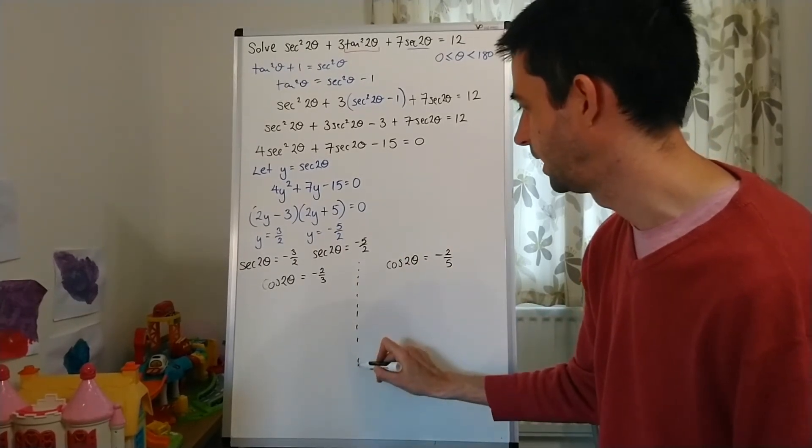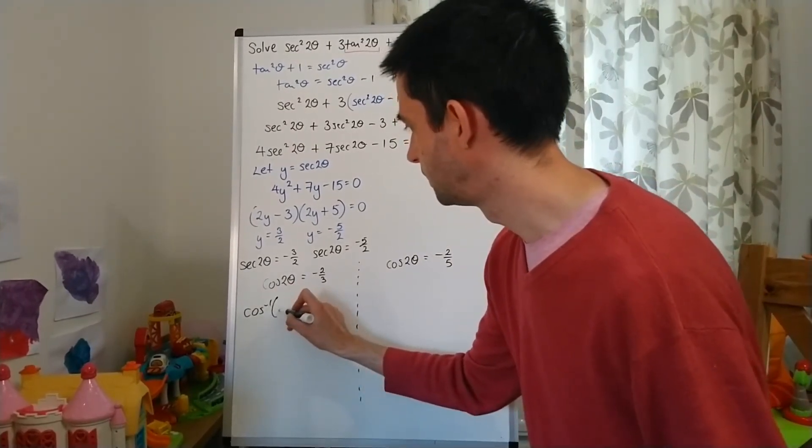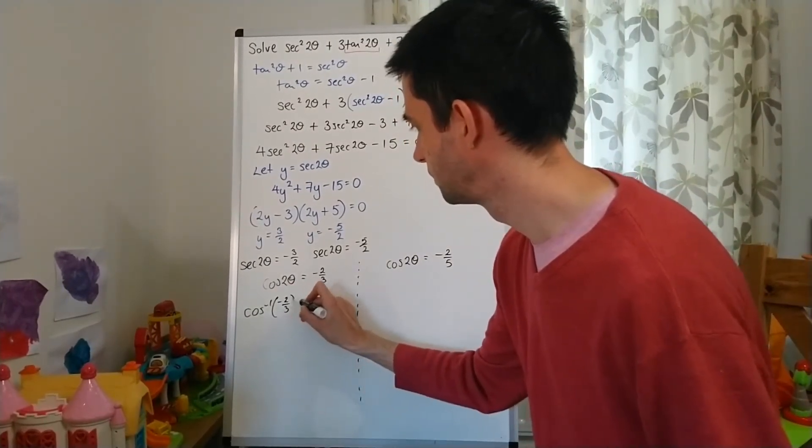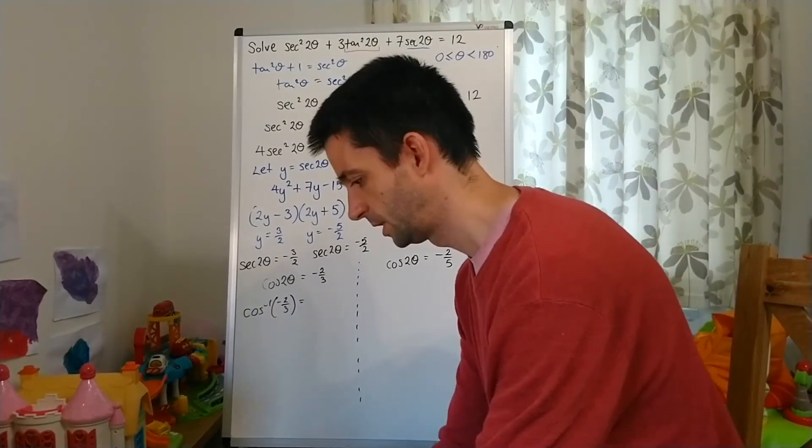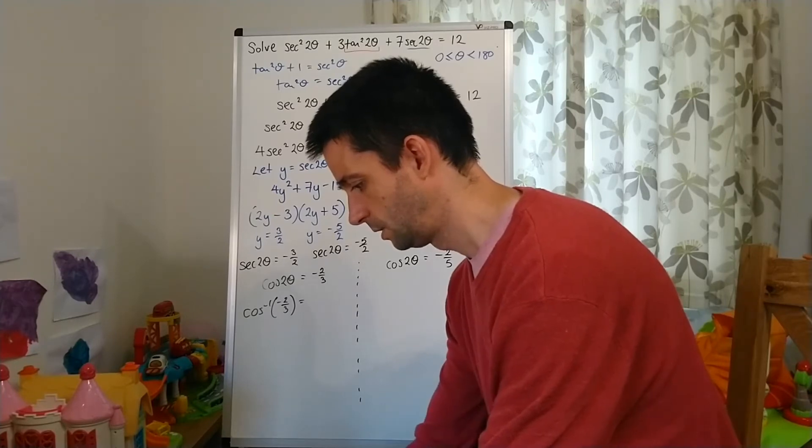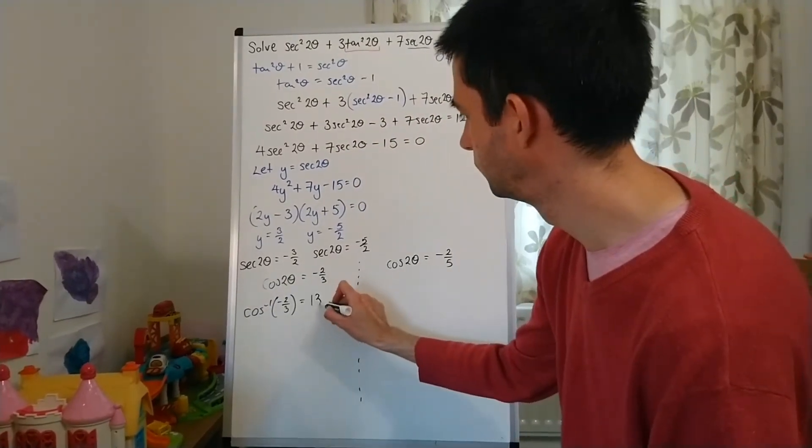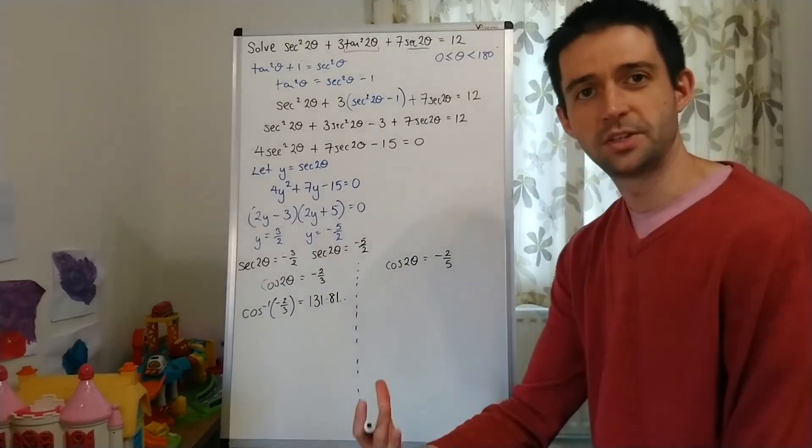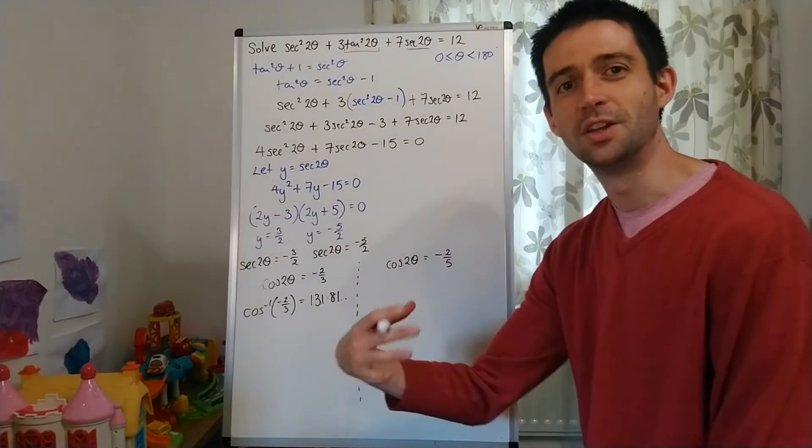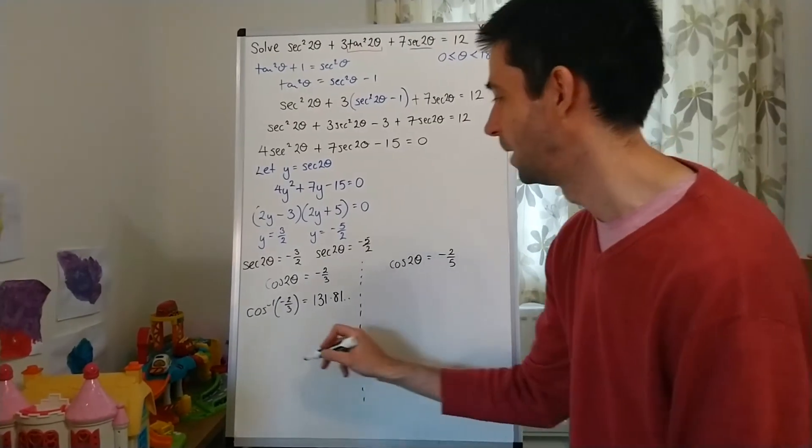Two solution sets coming here. So, cos inverse of -2/3. Cos inverse of -2/3, which is 131.81. Now, by this stage, I've done so many cos diagrams that I know that the second solution for cos is 360 minus the first one.